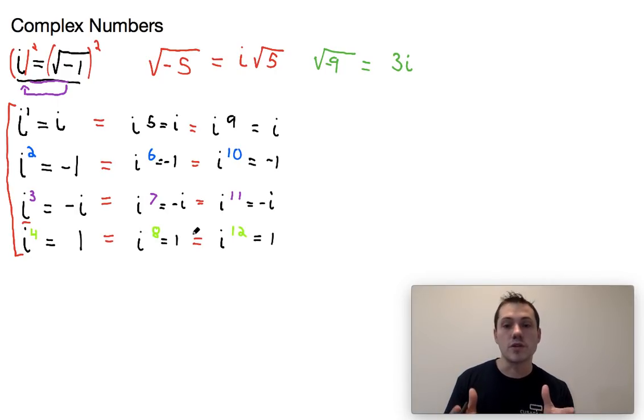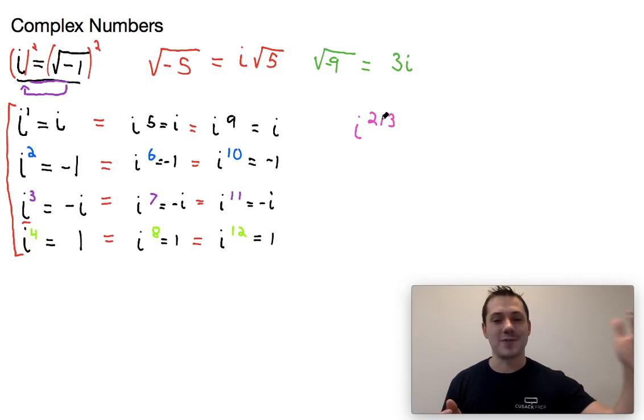Now this is something you could count out if the numbers were pretty small, maybe if you're only going up to i to the seventh or i to the tenth. It would be pretty easy to write out this pattern, but where it gets difficult on the SAT is if they throw something crazy at you. Maybe they're going to ask you something like, what is i to the 213th power? Well you don't have that much time on the SAT. You don't want to be writing out i to the first, i to the second, i to the third, all the way up to i to the 213th. But fortunately this pattern has, we can take advantage of this pattern.